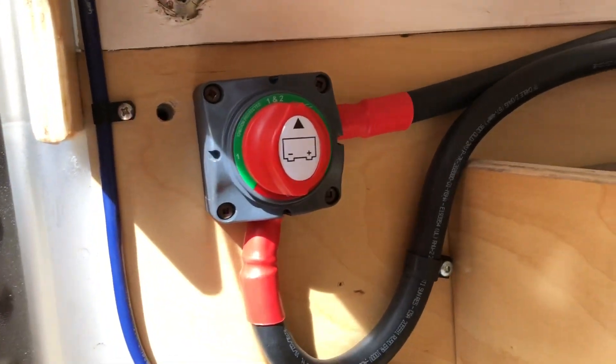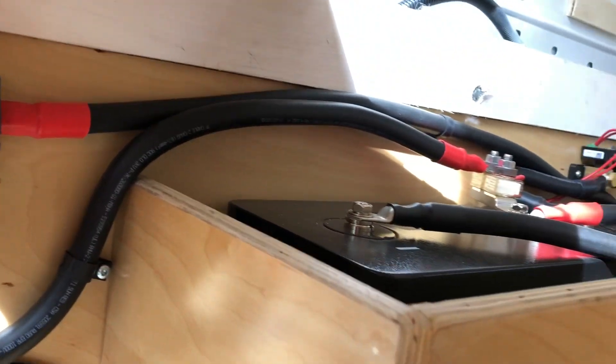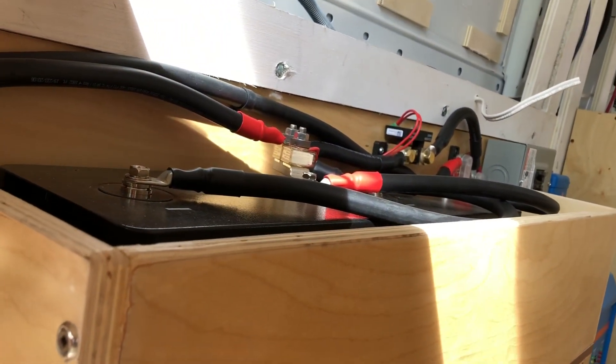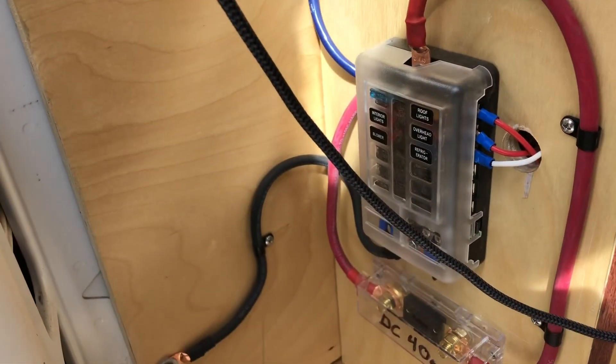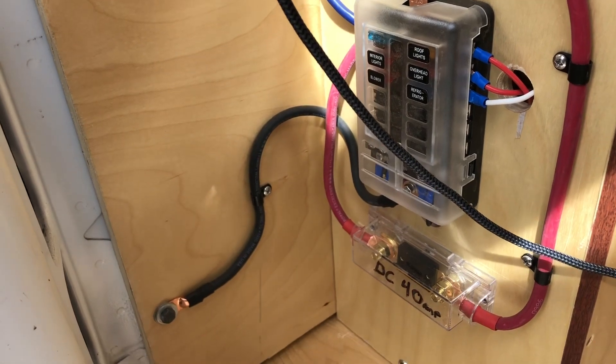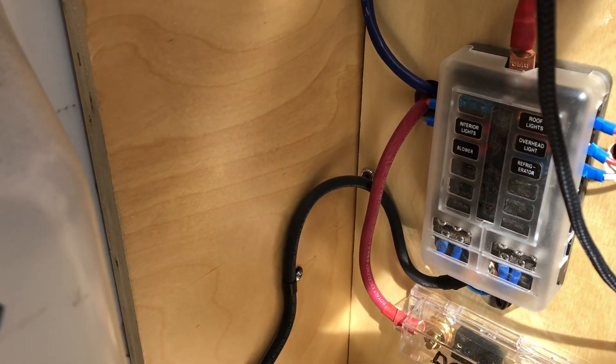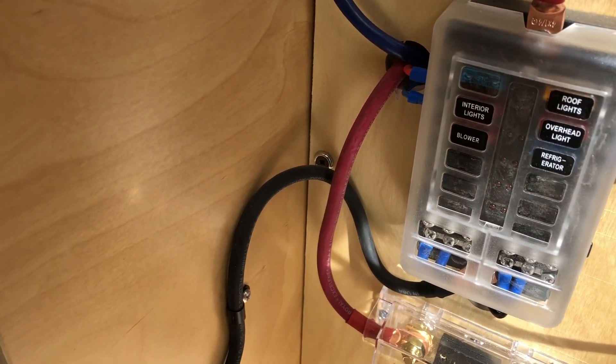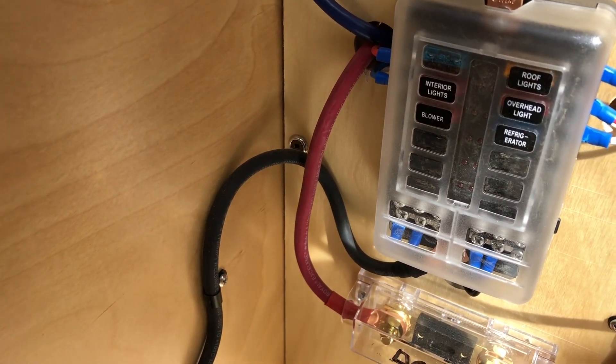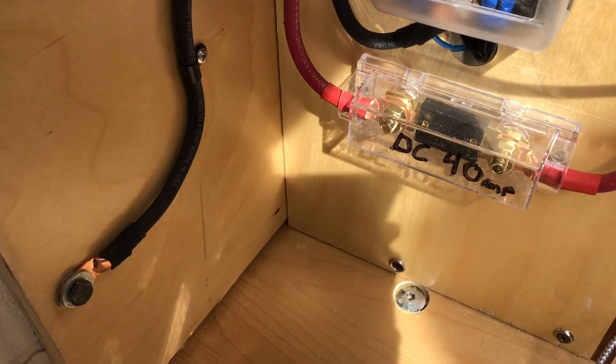I have a full shutoff switch here for shutting the batteries completely off. And here's one of my DC panels. This one runs my overhead lights for inside as well as my refrigerator and my blower for the toilet. And it's all looked after by a DC 40 amp.